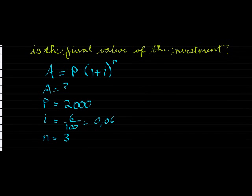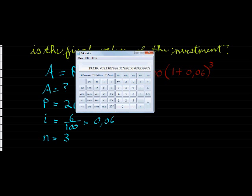So if we substitute into our formula, we find A equals 2,000 times 1 plus 0.06 to the power of 3. Using our calculator, we say 2,000 times, in brackets, 1 plus 0.06, close the brackets, exponent to the power of 3. Equals 2,382 Rand.